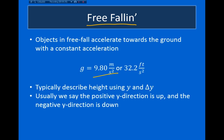A few things I should mention about vertical motion before we jump into any examples. First, when we describe the height of an object and talk about vertical motion, we typically use y to describe the position of the object and delta y to describe the change in the height of the object, as opposed to x and delta x in the previous video.